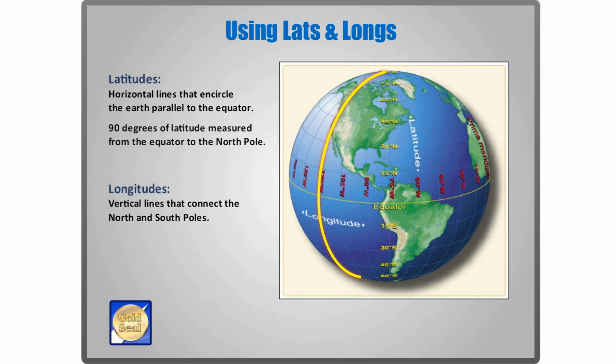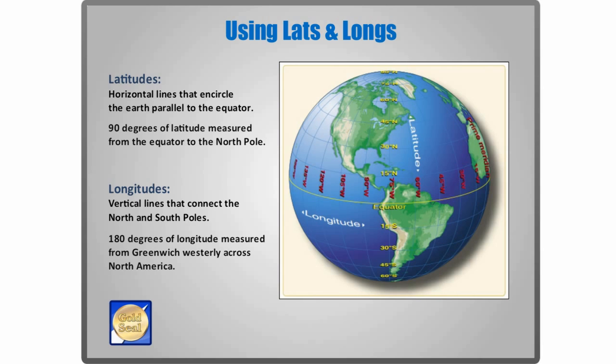These vertical lines connect the two poles. The starting point for the lines of longitude is Greenwich, England. 180 degrees of longitude proceed east and west, meeting on the opposite side of the globe. There are 360 lines of longitude in total, but of most interest to pilots in the Western Hemisphere are the 180 that march across North America and outward across the Pacific Ocean. Any point on the surface can be referenced by its unique combination of latitude and longitude.